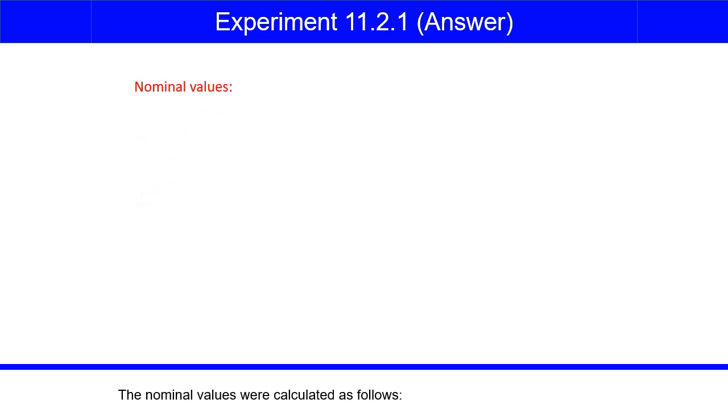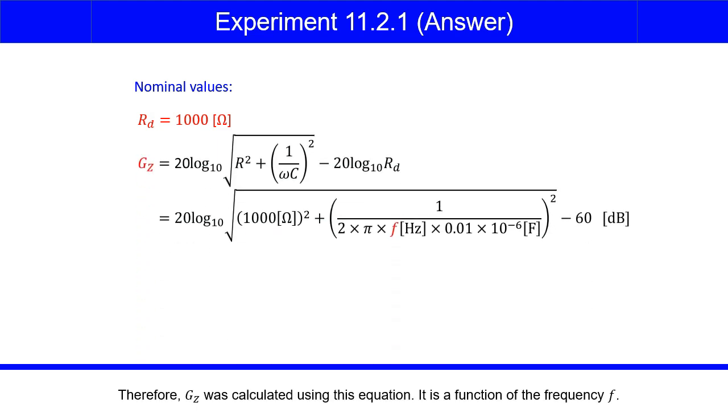The nominal values were calculated as follows. The resistance RD was equal to 1000 ohms. Therefore, GZ was calculated using this equation. It is a function of the frequency F.